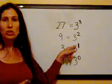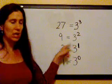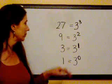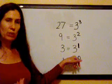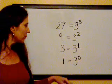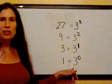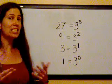9 is equal to 3 squared. 3 times 3 is 9. So these are all things that we know and agree upon. 3 is equal to 3 to the first power.